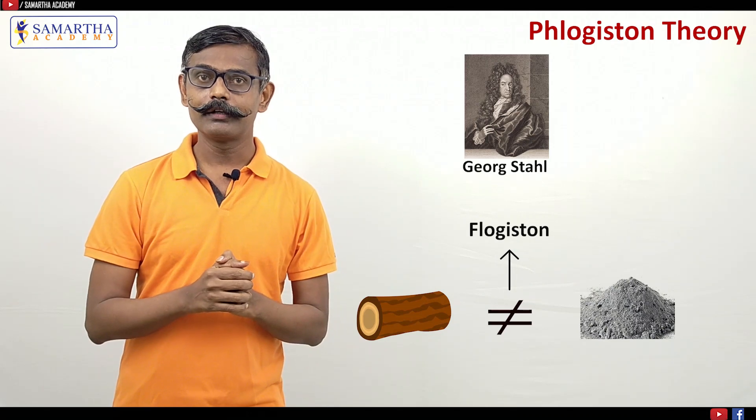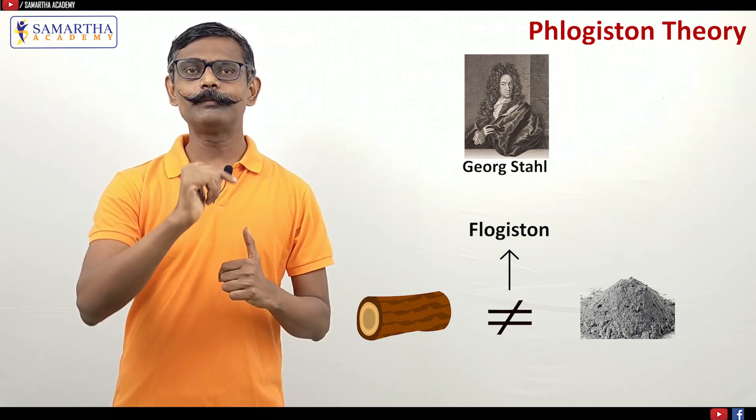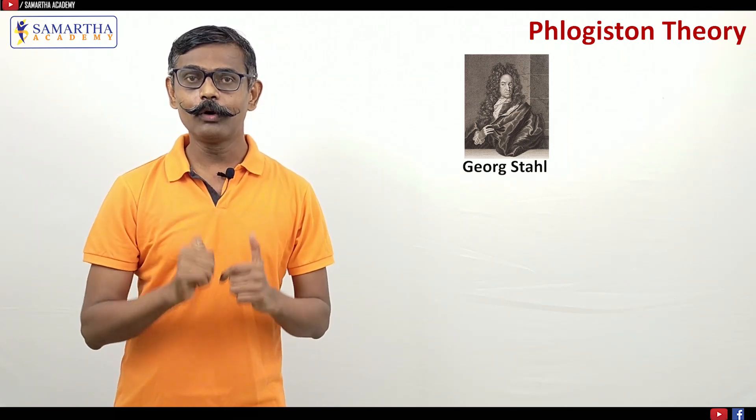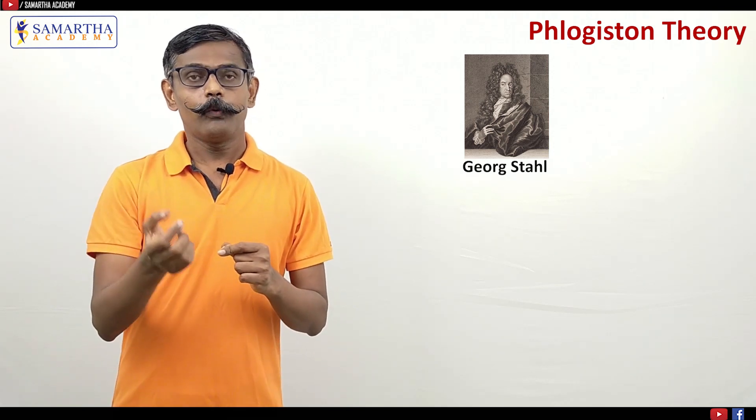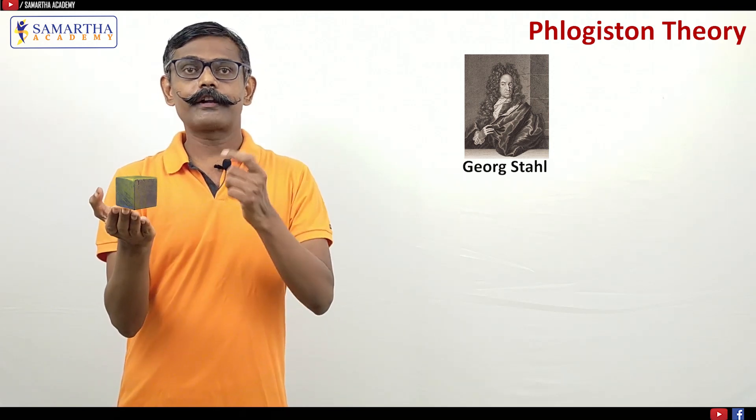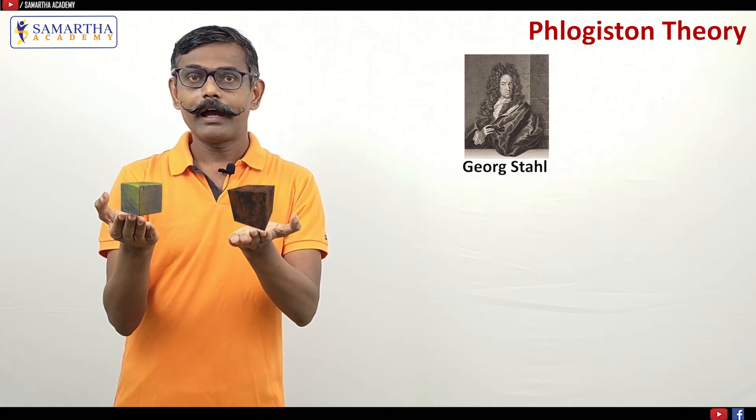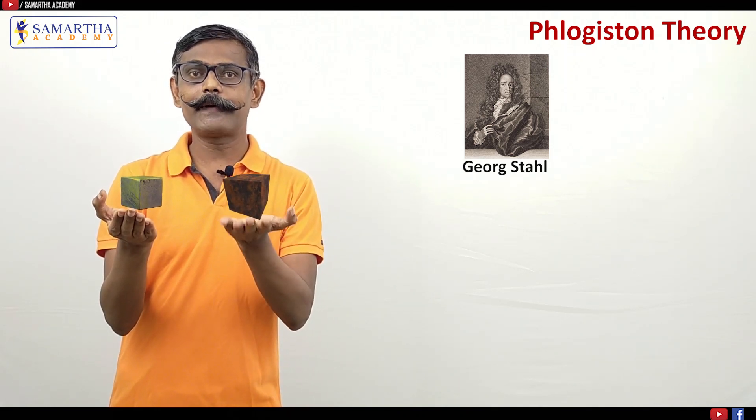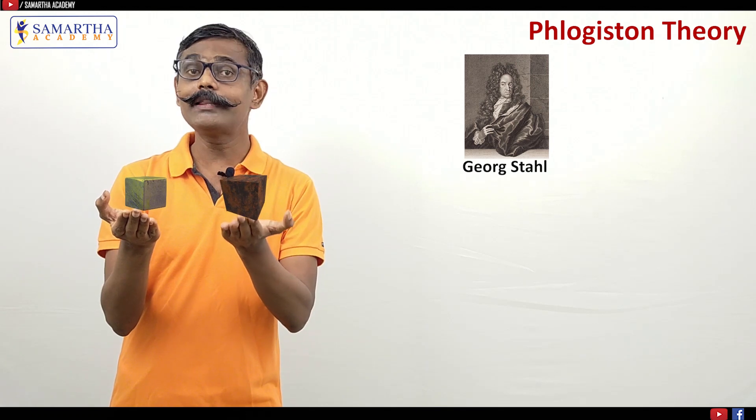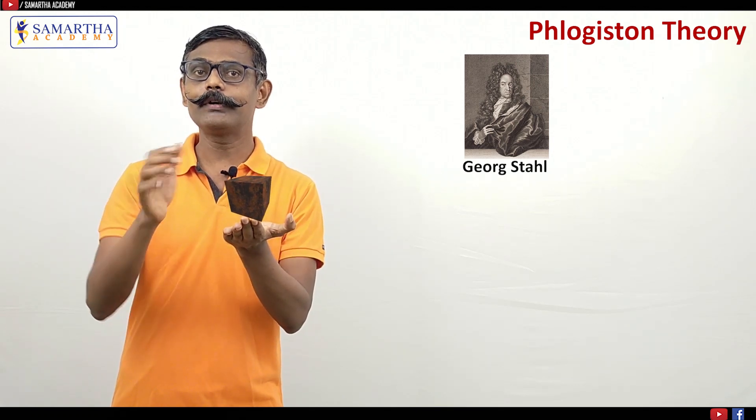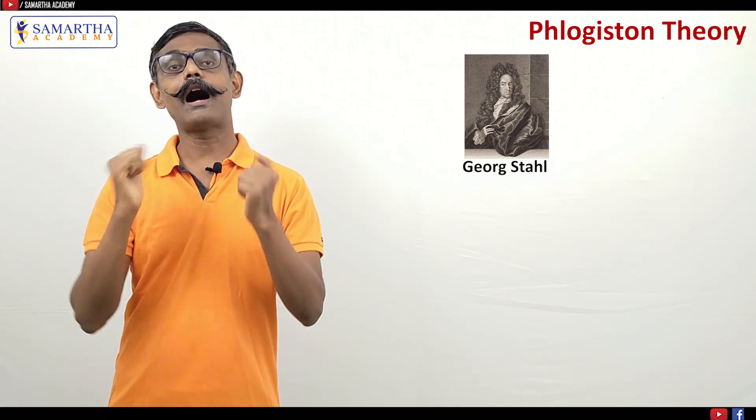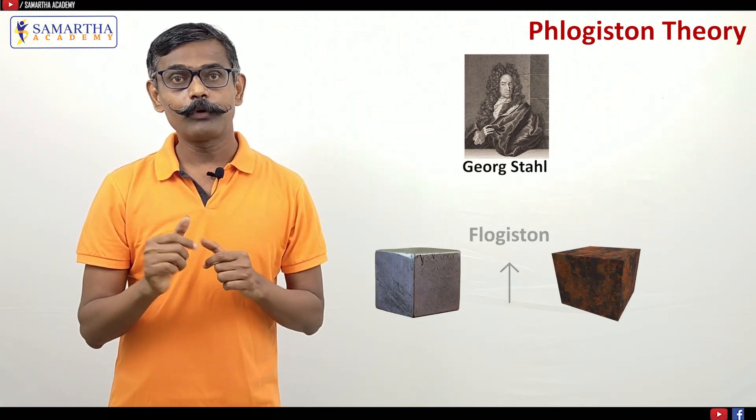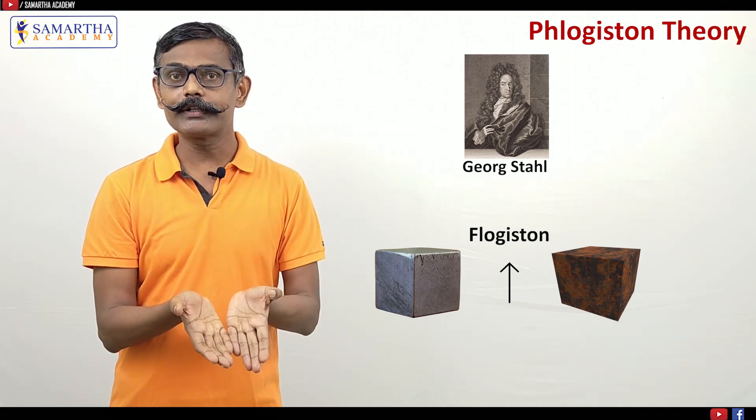Decreasing quantity was there. But to the surprise of Stahl, he noted if iron rusts, then the weight of the iron and rusted iron - actually as per his theory it was expected that rusted iron should have less weight. But it is found its weight is more than that of the iron. What does it mean? Phlogiston went out but weight increased.